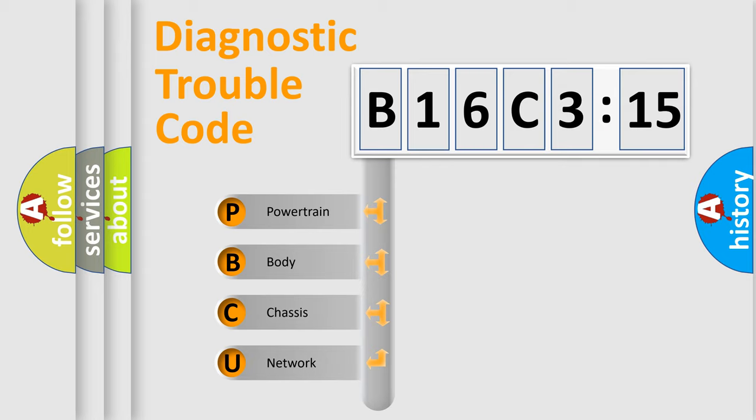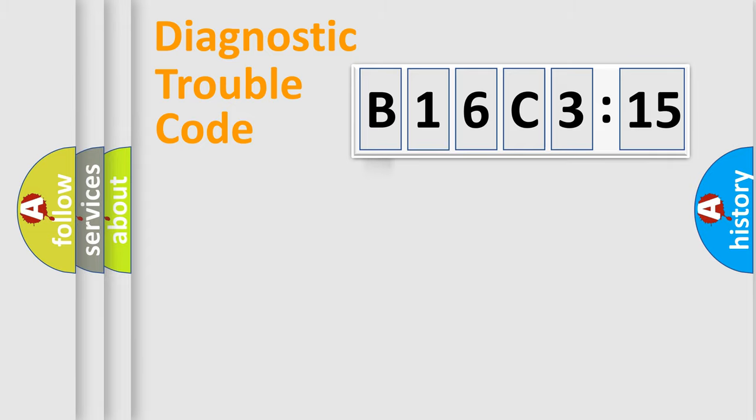If the second character is expressed as zero, it is a standardized error. In the case of numbers 1, 2, or 3, it is a more specific expression of the car-specific error.